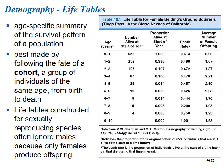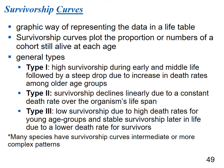A survivorship curve is a graphic way of representing life table data. These curves oversimplify and not all species fit neatly into them — some have intermediate or more complex patterns. Survivorship curves plot the proportion or numbers of a cohort still alive at each age, generalized into type one, type two, and type three. Type one has high survivorship in early and middle life followed by a steep drop due to increased death rates in older age groups. Type two has equal chance of death at any age. Type three has high death rates for young age groups and stable survivorship later due to lower death rates for survivors.